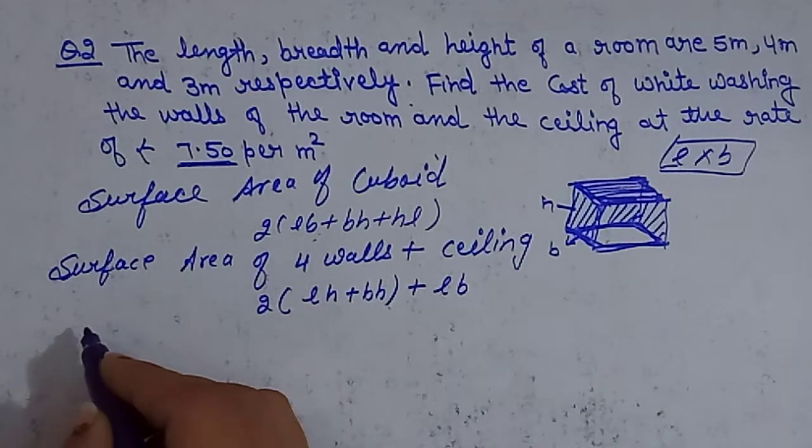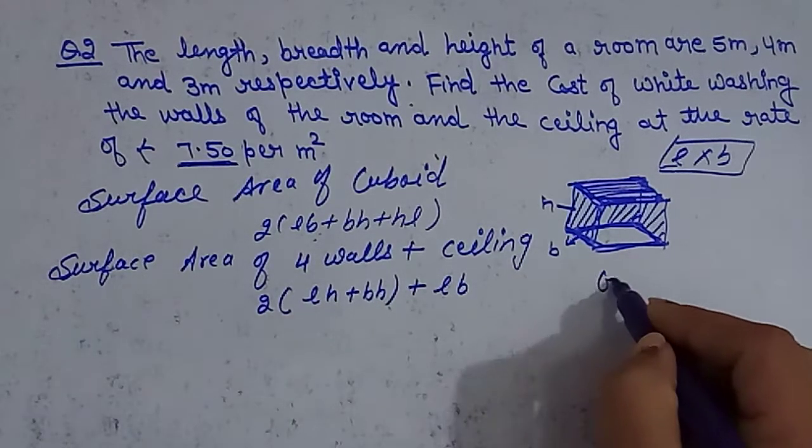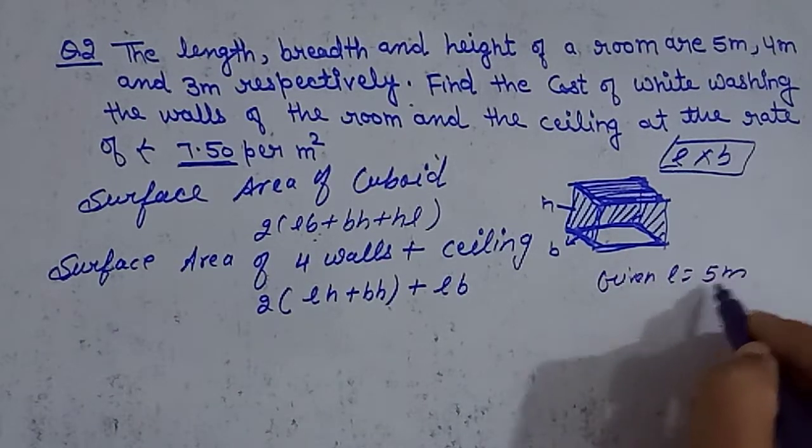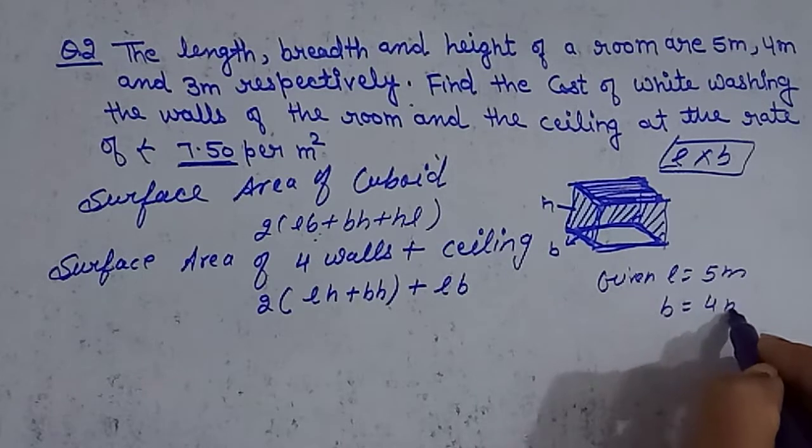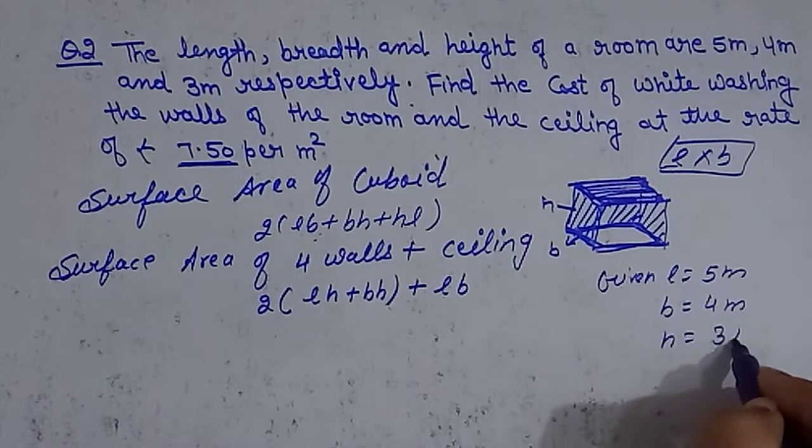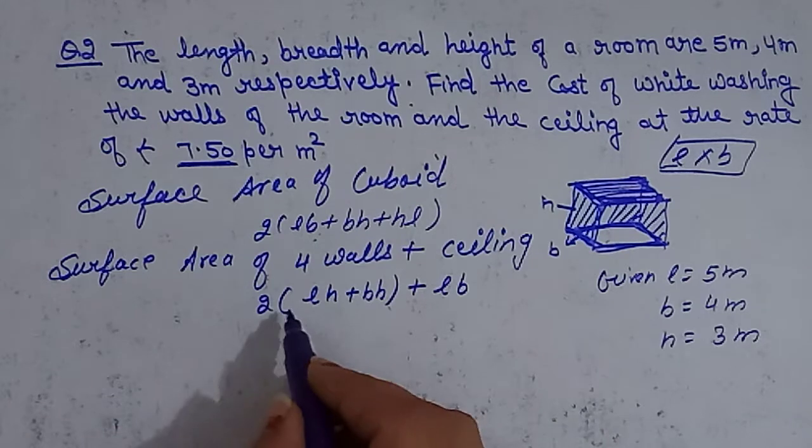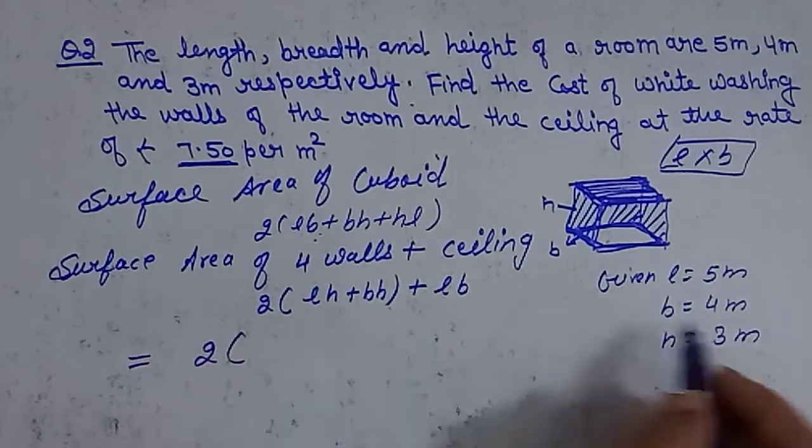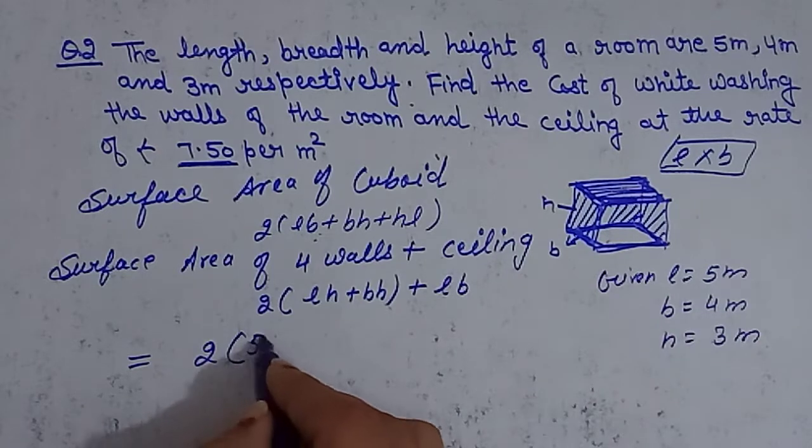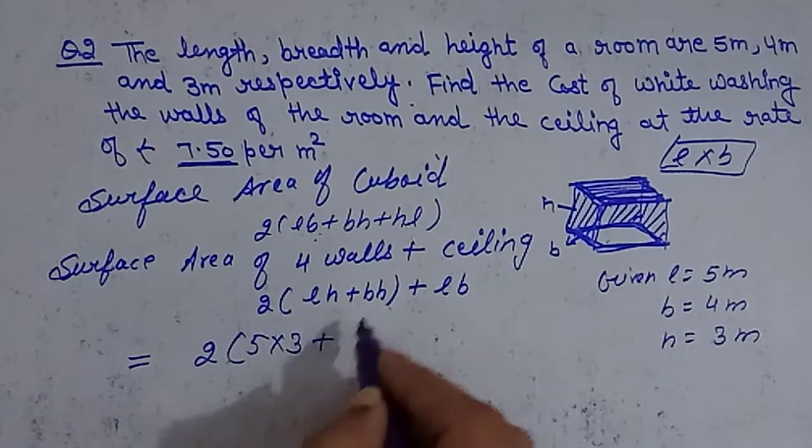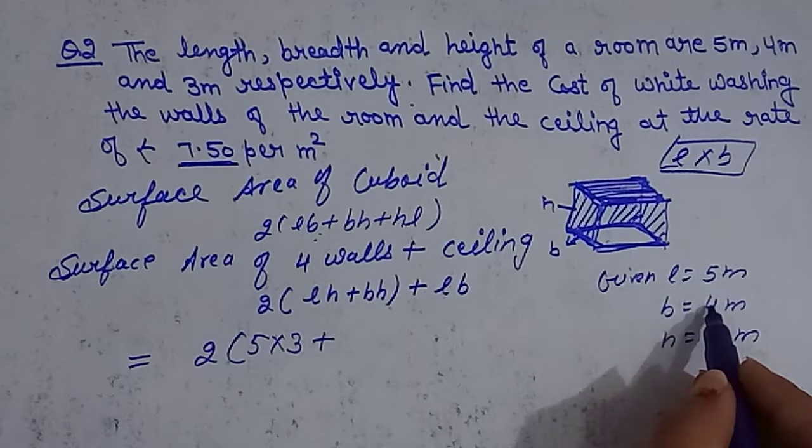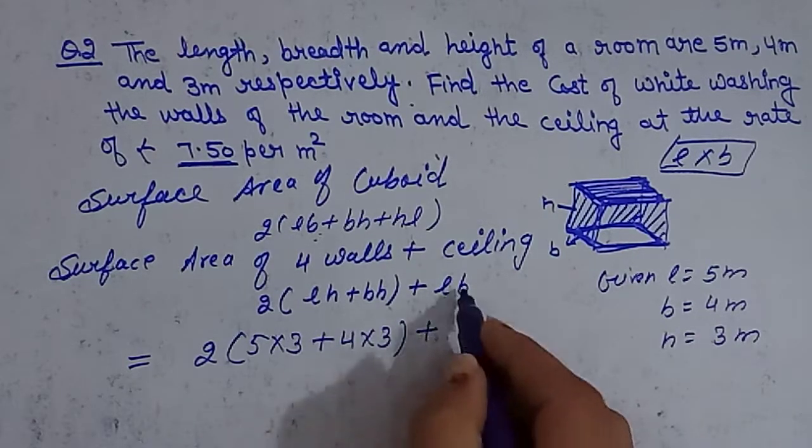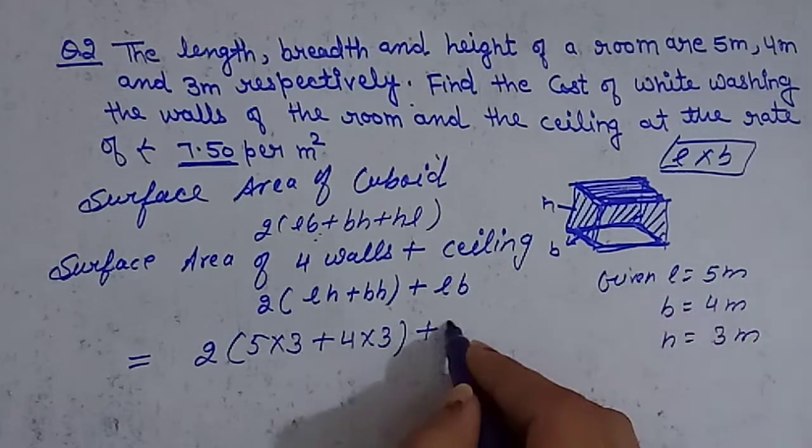Here is what is given: length is 5 meters, breadth is 4 meters, height is 3 meters. Now let's calculate: 2 into (lh + bh) + lb = 2 into (5×3 + 4×3) + 5×4.